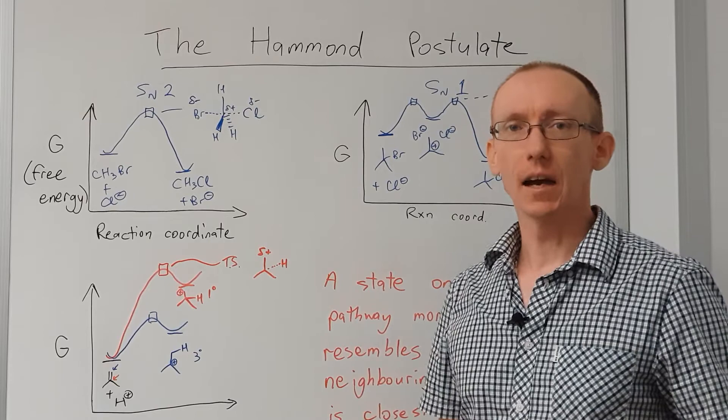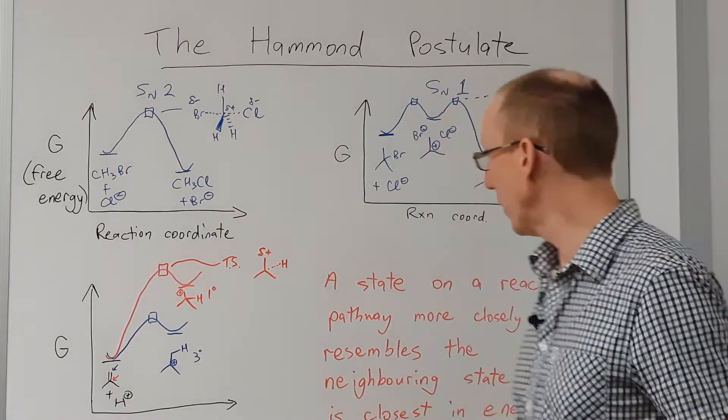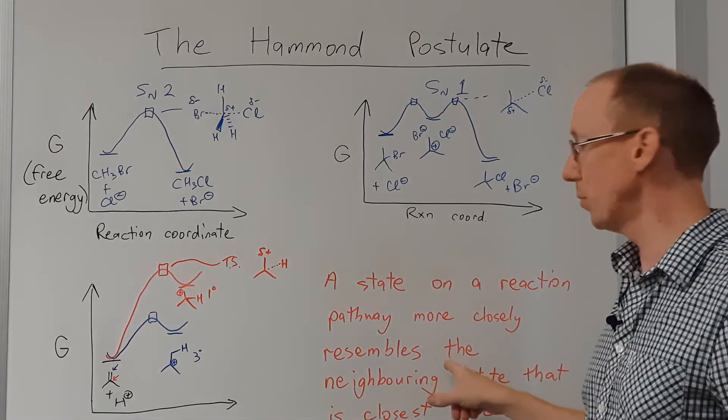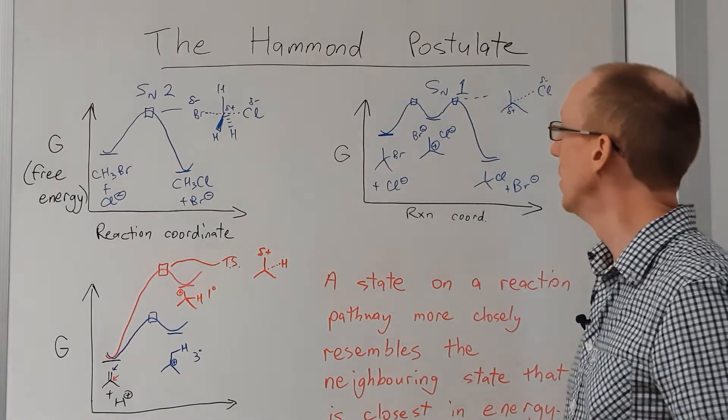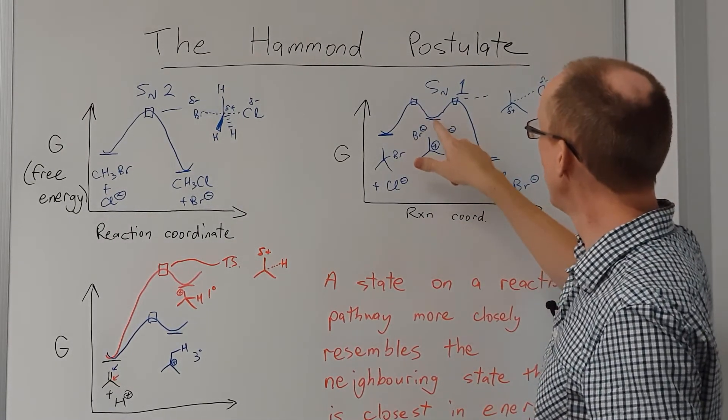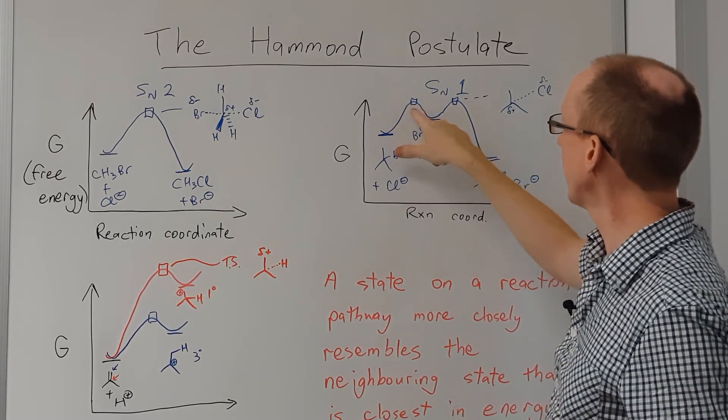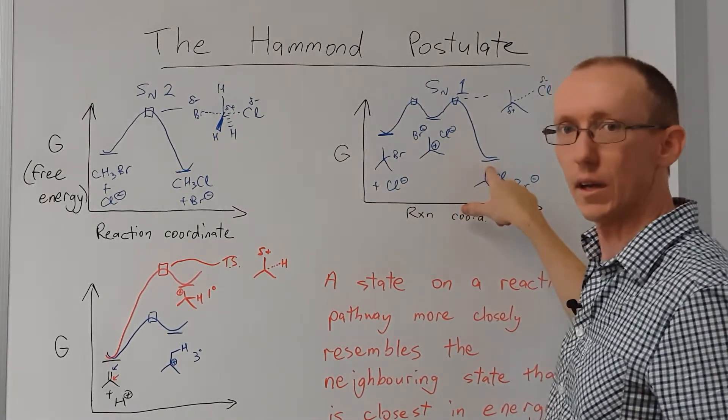Overall, this is what's known as the Hammond postulate. My definition of the Hammond postulate is that a state on a reaction pathway more closely resembles its neighboring state that is closest to it in energy. So for this intermediate here, the transition state to either side of it closely resemble that intermediate rather than the starting material or the products.